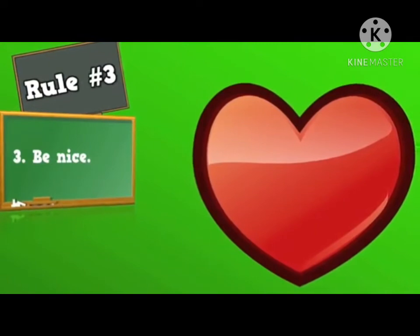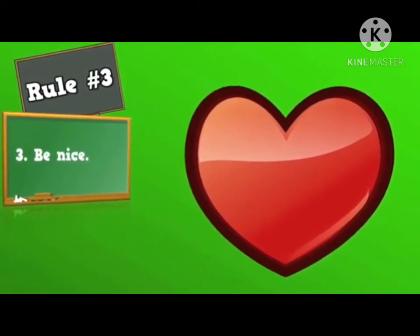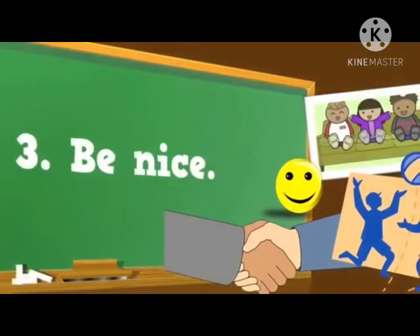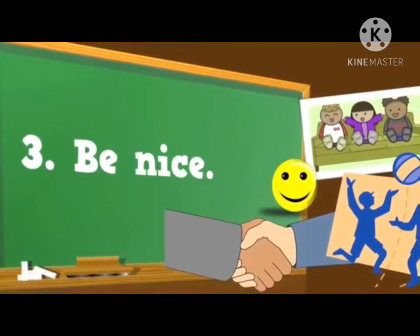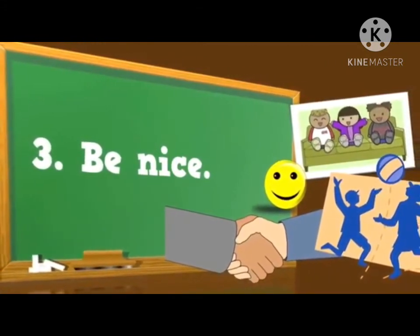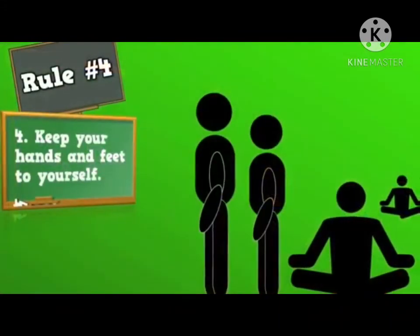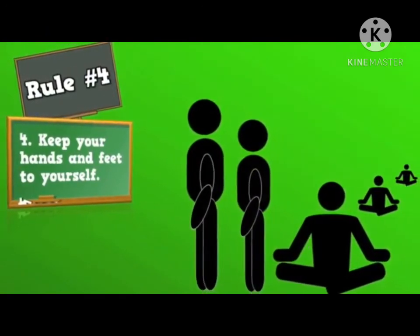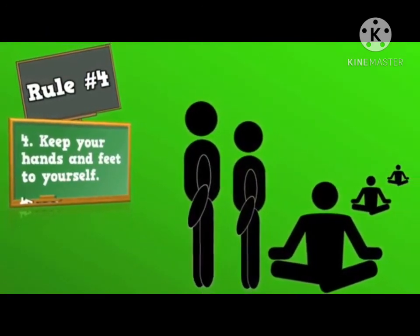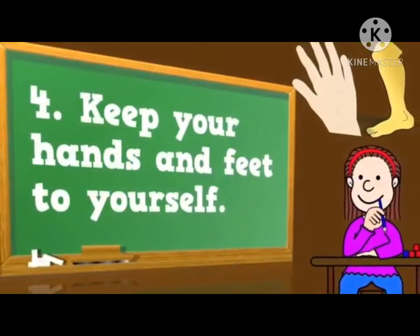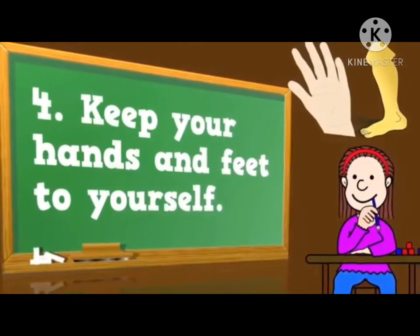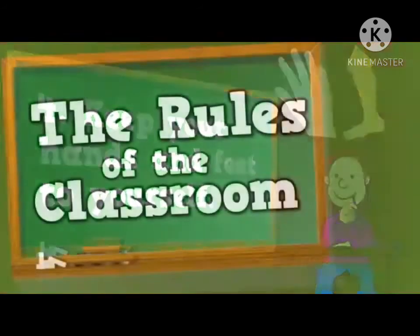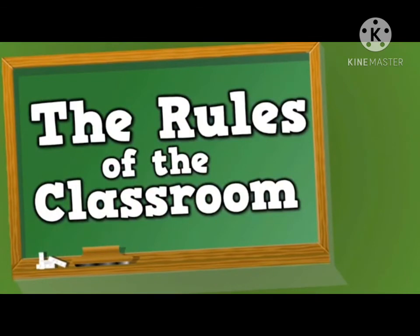Well, the third little rule has to do with our hearts — it's how we treat our friends. Be nice, don't be a bully now, don't be mean to them. Well, the fourth little rule has to do with our bodies — everything has its place. Keep your hands and feet to yourself, don't touch your neighbor's face.